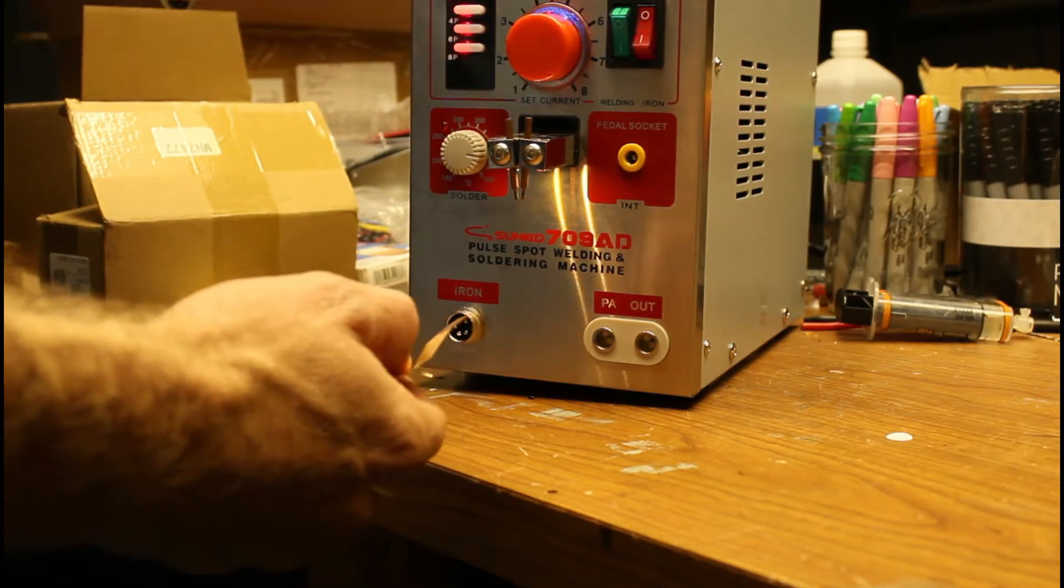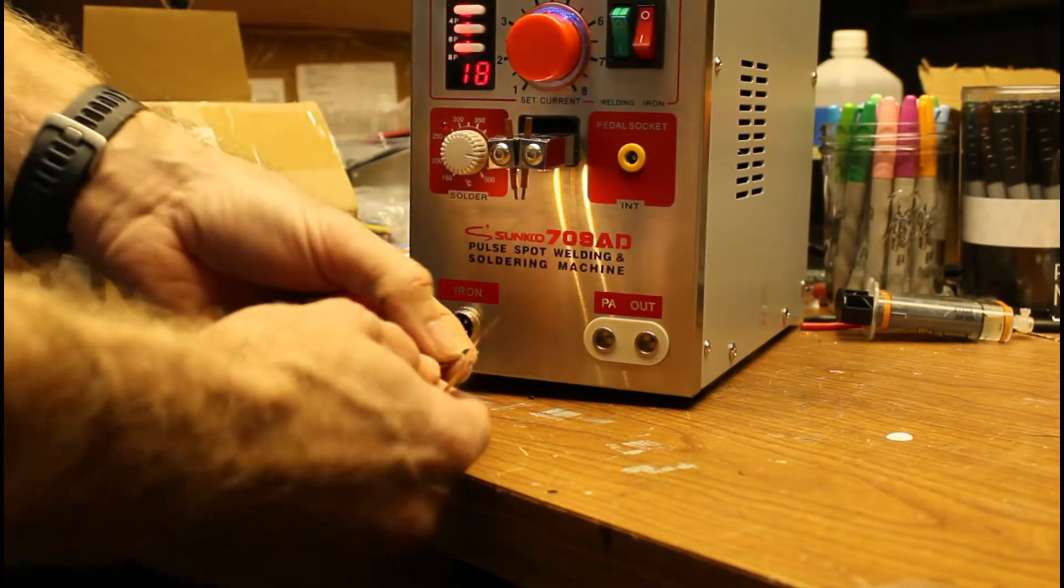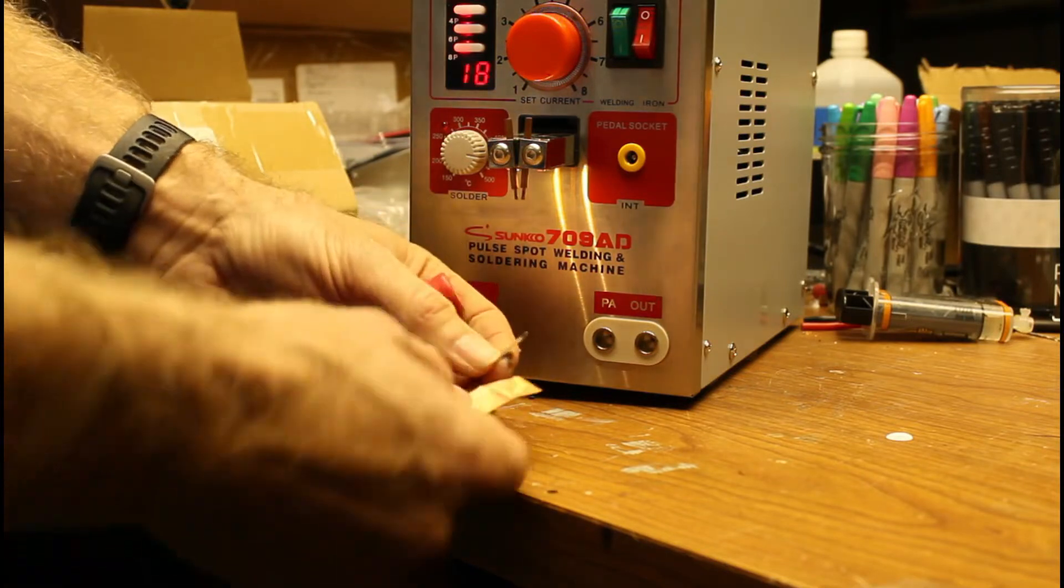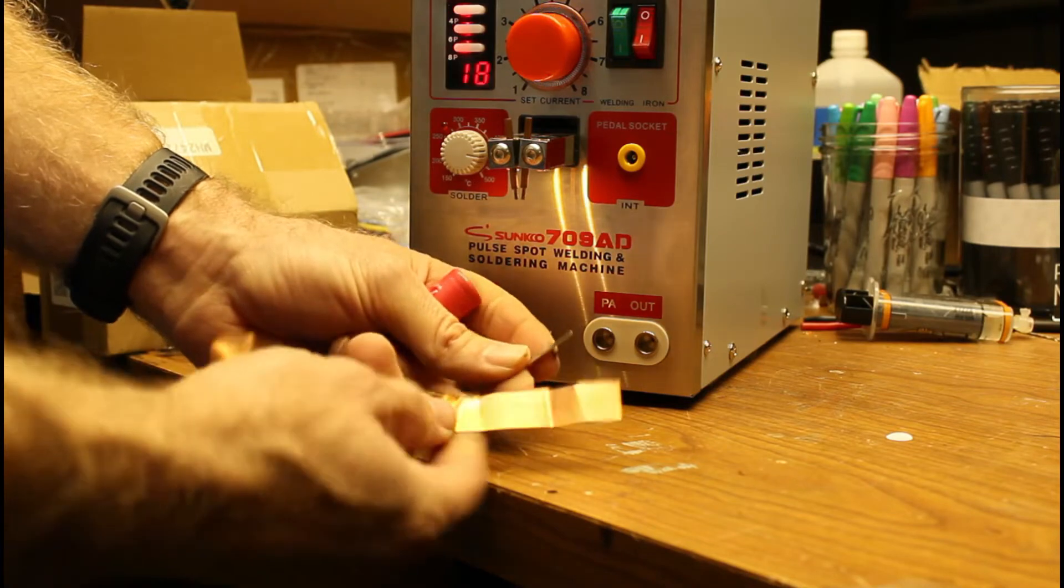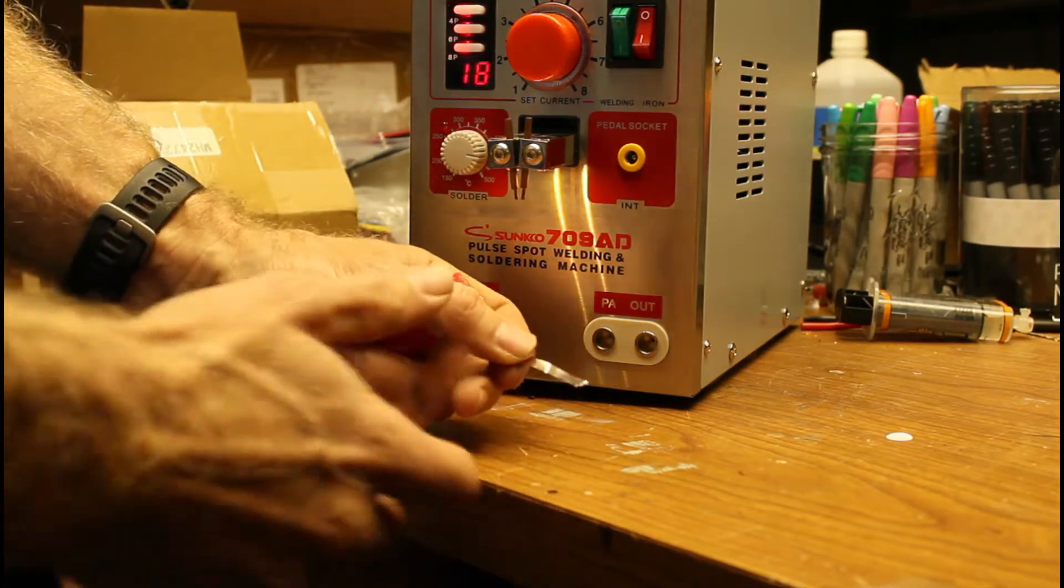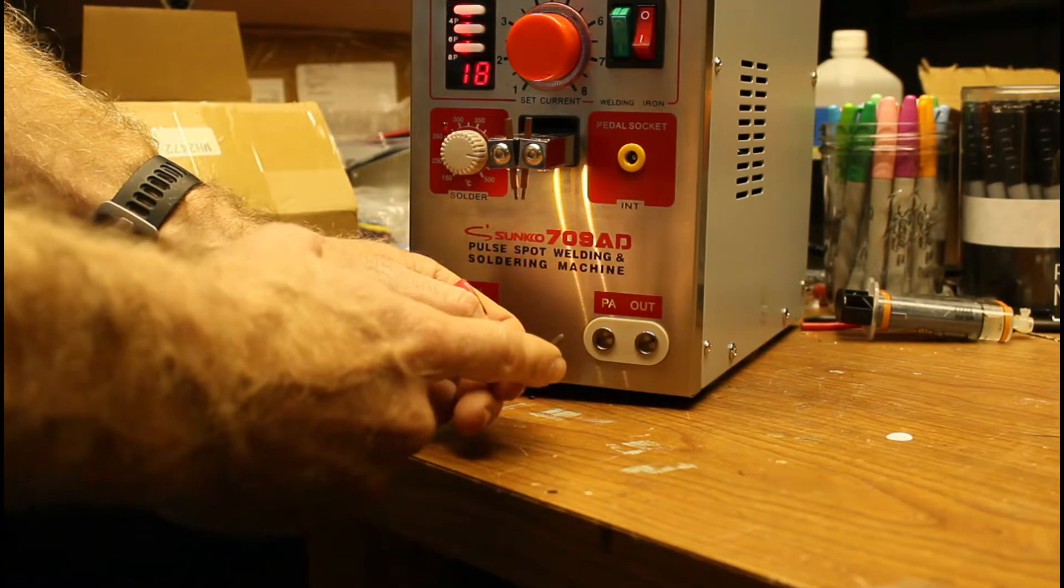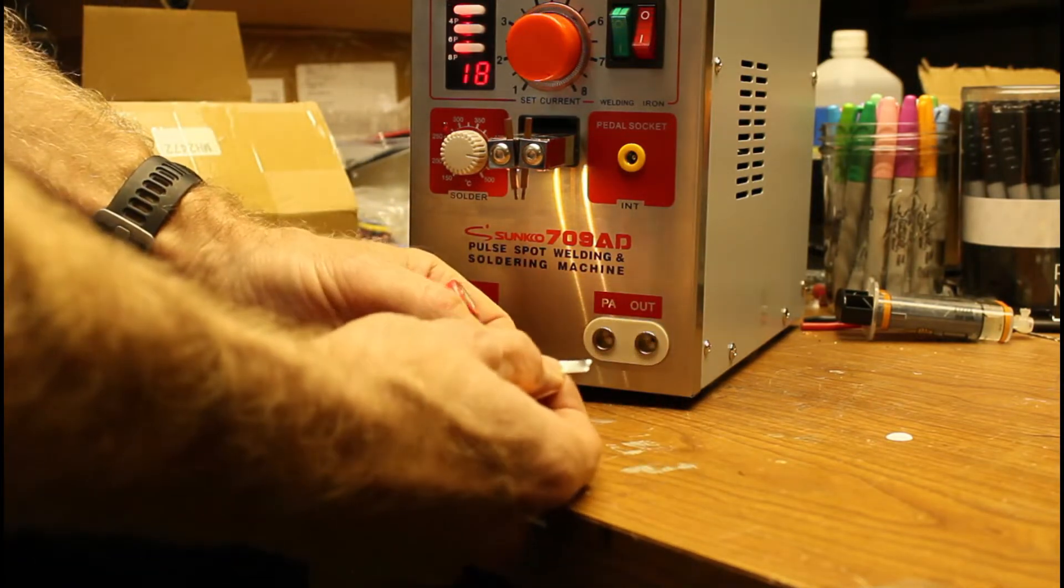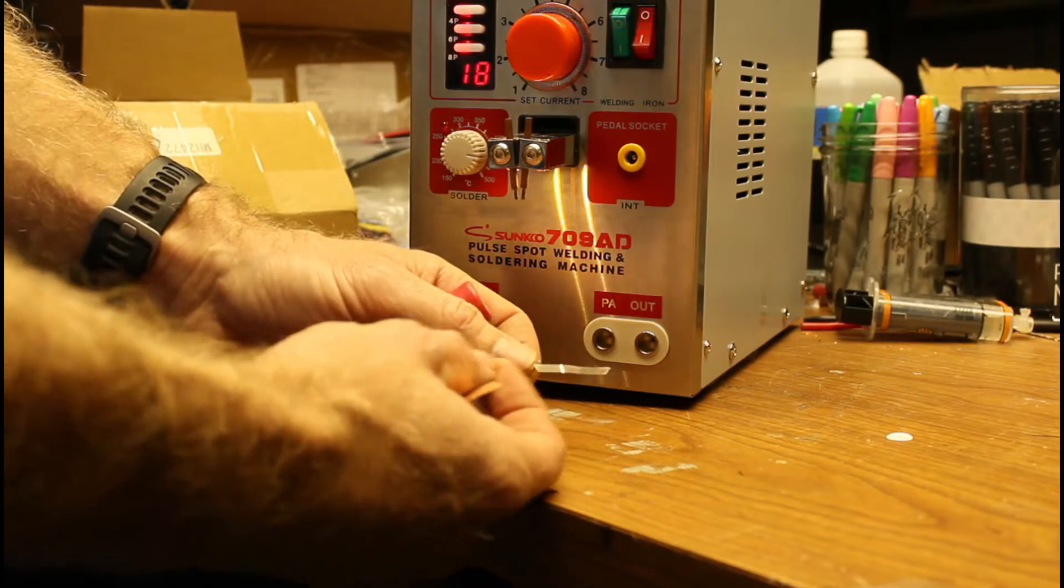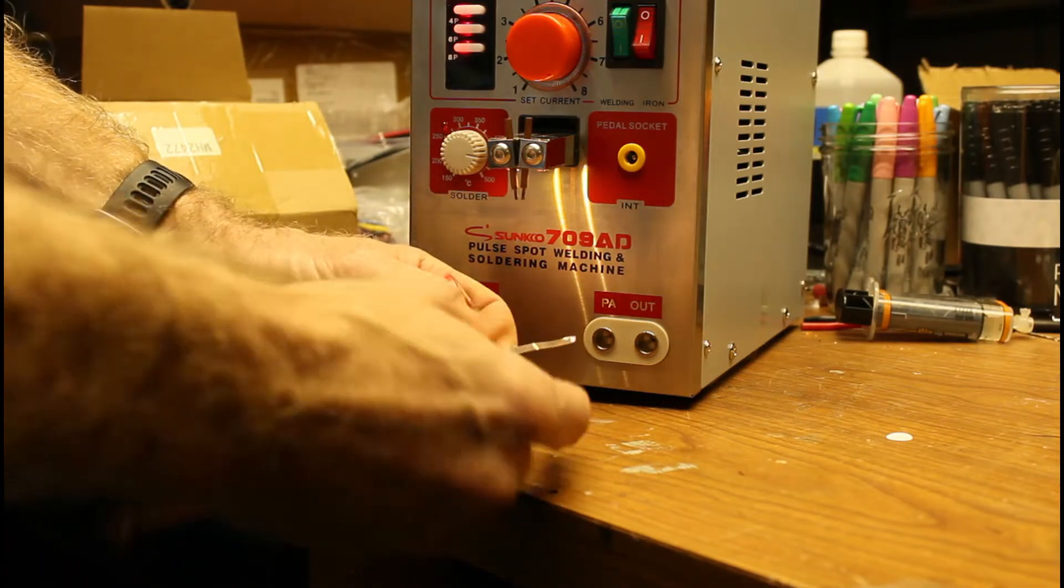What I have is 0.1 millimeter copper sheet, 0.1 millimeter nickel plated steel. Nickel plated steel doesn't make a very good electrical conductor. The steel is incredibly resistant, however in this application that's actually a benefit because it's going to create a lot of resistance and a lot more heat.